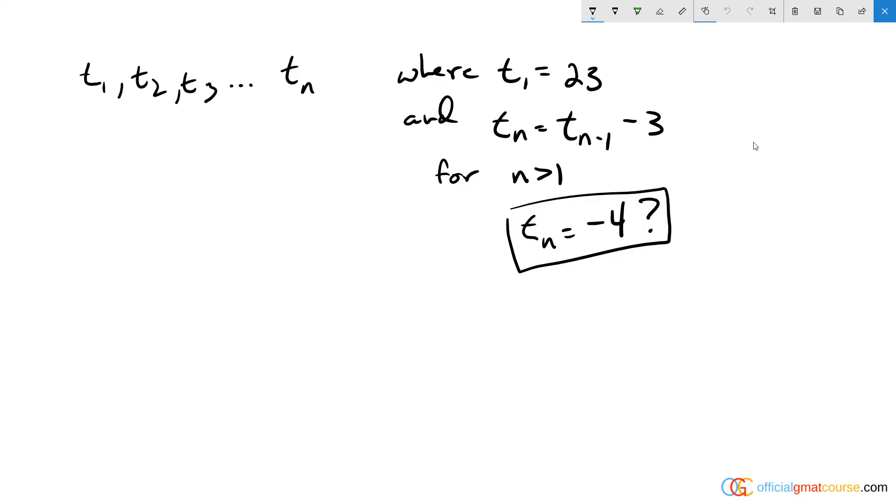We have an arithmetic sequence here. These are basically like cousins of function questions if you're familiar with those. What we're being told is we have a sequence of numbers where the names of our numbers are t sub 1, t sub 2, t sub 3. That's basically saying this is the first number, this is the second number.